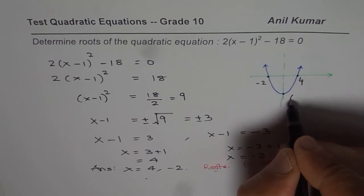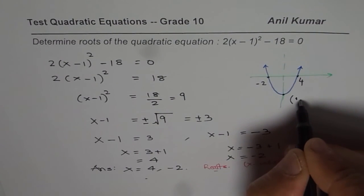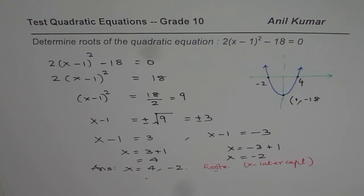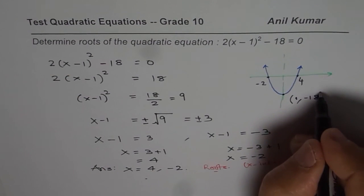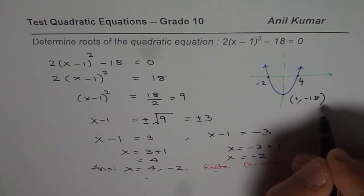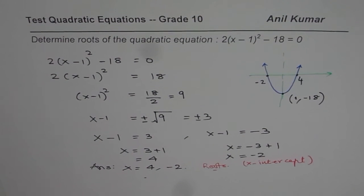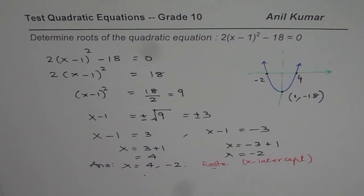And this is obviously your vertex, which is at 1, minus 18. So that is how you are going to get the graph of this function from here. So that is how you should be getting your graph. I hope that really helps you to visualize what we have just done. Thank you and all the best.